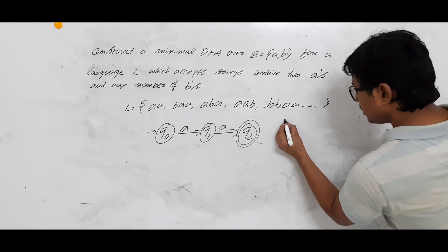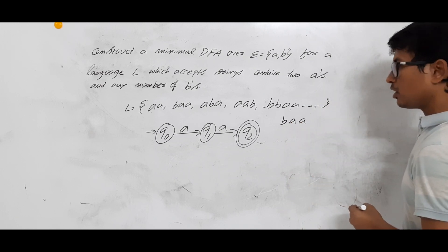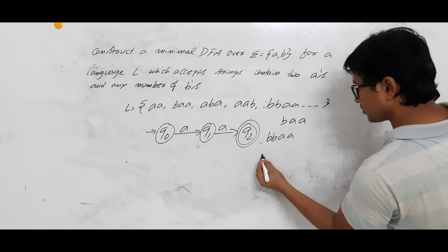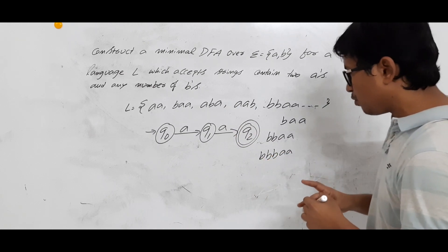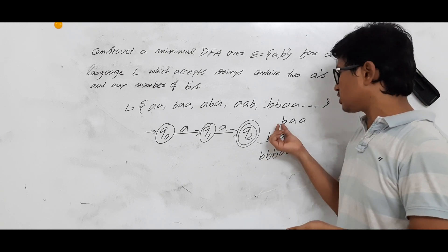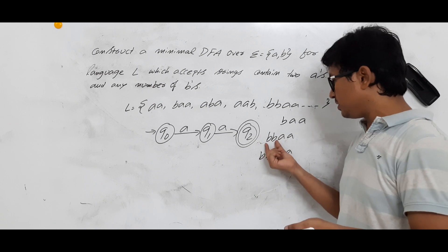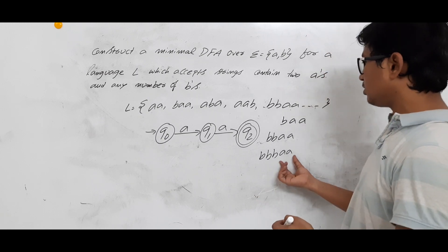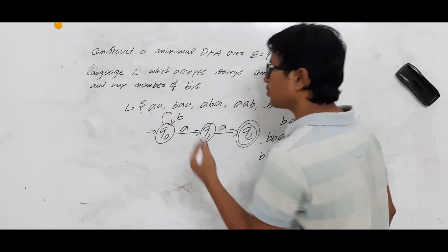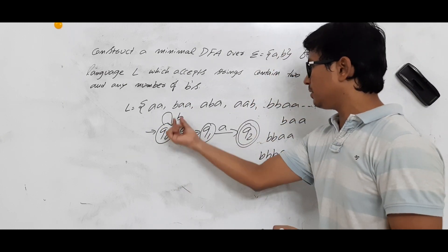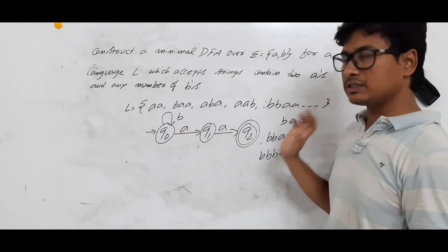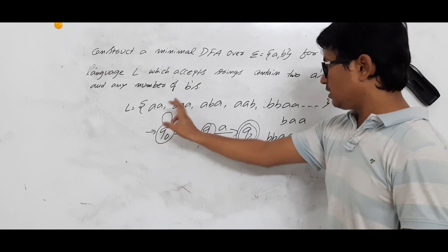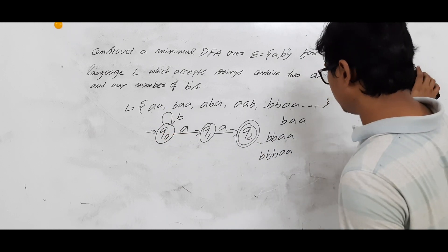BAA should be accepted, and BBAA should also be accepted. The string can start with any number of B's — zero, one, two, three, or more — but it must contain AA. So if I keep a self-loop on B at Q0, there is no problem. It will accept AA directly, or BB followed by AA, or any number of B's followed by AA.